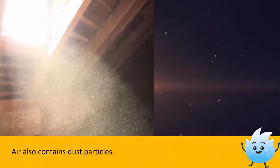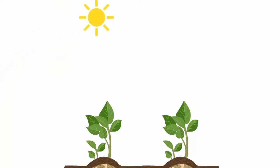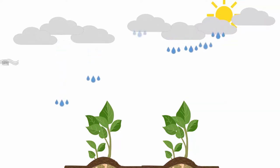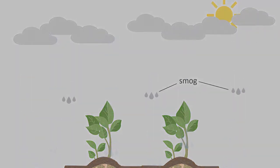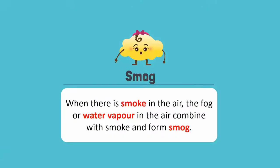Those are the dust particles visible in a sunbeam. Air also contains dust particles. The rate of evaporation from plants and animals is controlled by the amount of water vapour present in the air. But sometimes, this water vapour forms smog. When there is smoke in the air, the fog or water vapour in the air combines with smoke and forms smog.